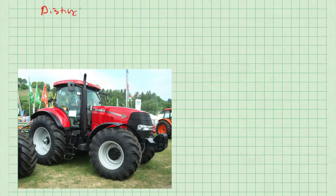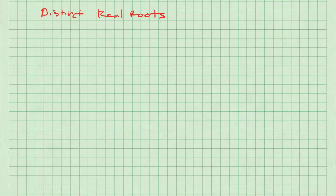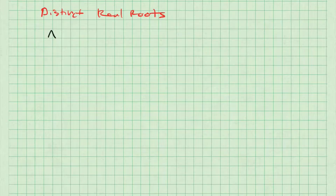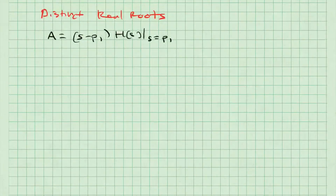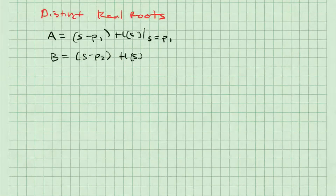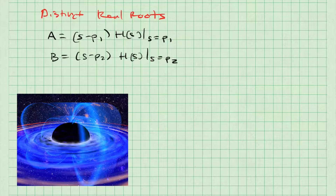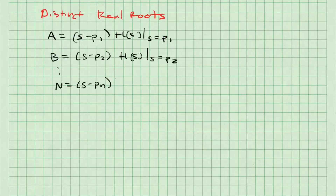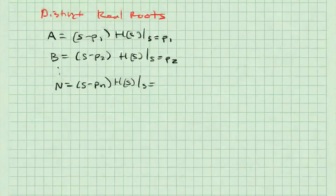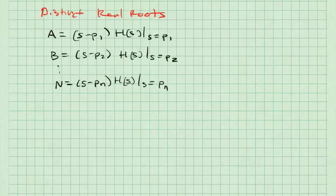The first case is the case in which I have distinct roots. In this case, the coefficients A, B, and so on can be found by doing the following. To find A, I'm going to multiply the original fraction H of S by S minus P1, and then set the value of S to be P1. By multiplying by S minus P1, I will cancel that out of H of S, and by setting S equal to P1, I'm choosing a point that would make H of S singular — in other words, put zero in the denominator. This allows me to solve for coefficient A. Likewise, for B, I would take S minus P2 times H of S and set S equal to P2. This continues for all distinct roots in H of S.